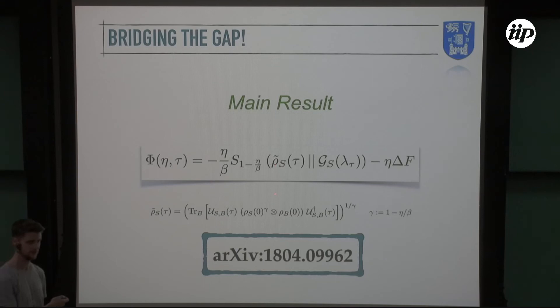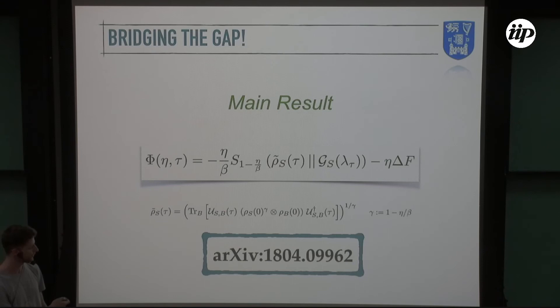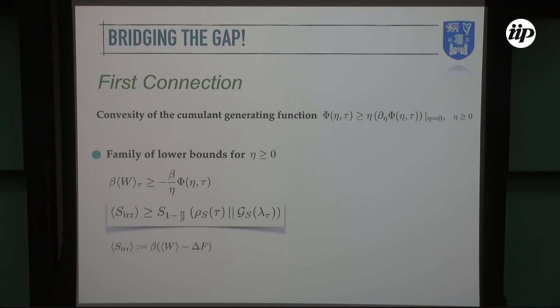The only difference here being that instead of rho_S(tau), we have this tilde rho_S(tau) which is defined here. I want you to notice that this differs only because the initial state of the system has a factor gamma which weights it, this gamma being exactly the argument of the alpha-Rényi divergence. So for eta going to zero — which is the counting field going to zero — this is equivalent to rho_S(tau).